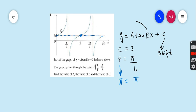Therefore, the period is π. So P equals π equals π upon B. π cancels with π, hence the value of B is equals to 1.